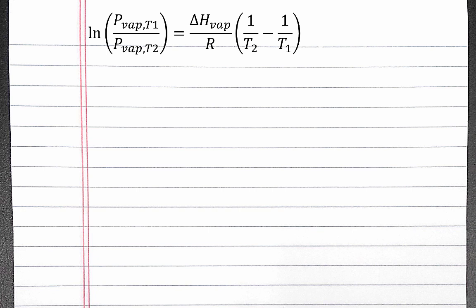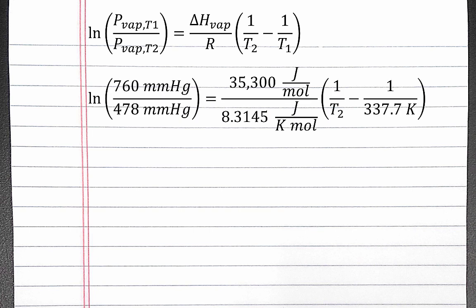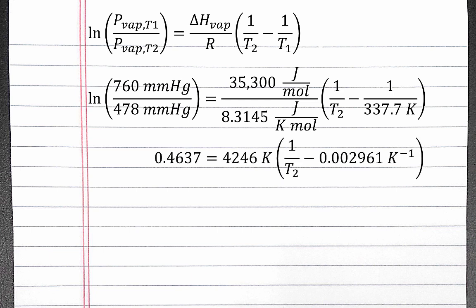Now let's plug all of our variables into our equation and solve for T2. On the left side, the natural log of 760 divided by 478 gives us 0.4637. On the right side, dividing 35,300 by 8.3145 gives us 4,246 Kelvin. Also on the right side, dividing 1 by 337.7 Kelvin gives us 0.002961 Kelvin to the negative first.